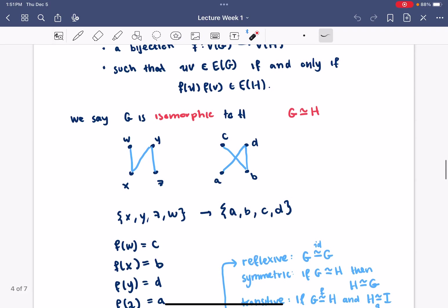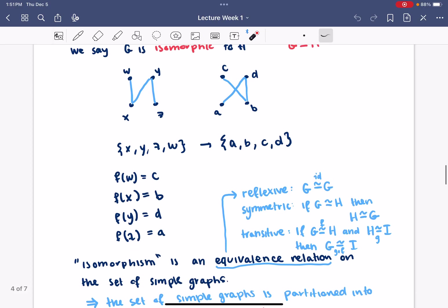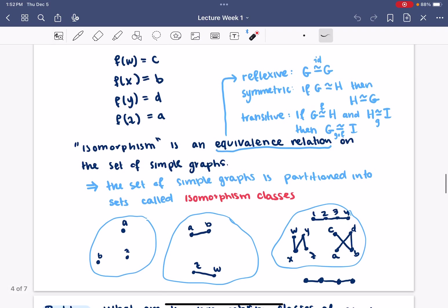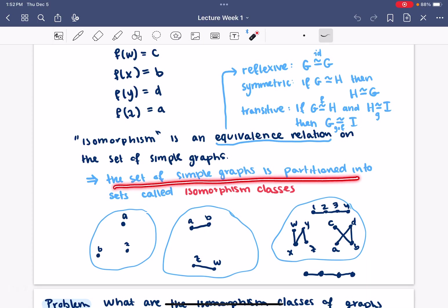Here's an example of two graphs that are isomorphic. A priori, these two pictures look different. The names of the vertices are all different. But we have a function between these two sets that preserves the edges. The notion of isomorphism is an equivalence relation on the set of graphs. That means that the set of simple graphs is going to be partitioned into sets called isomorphism classes.